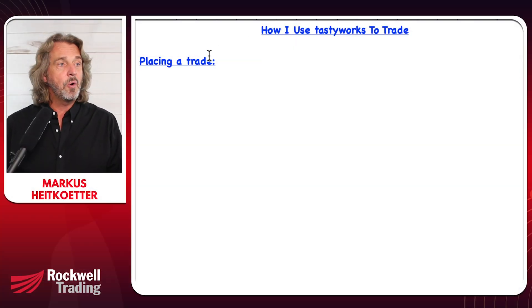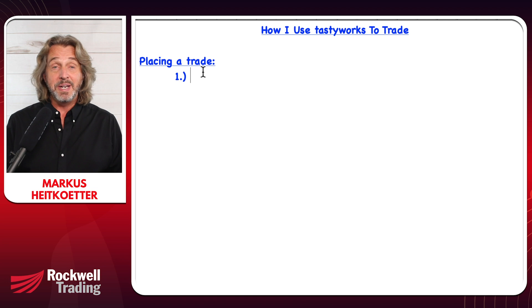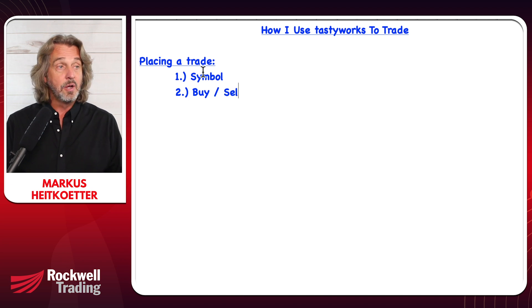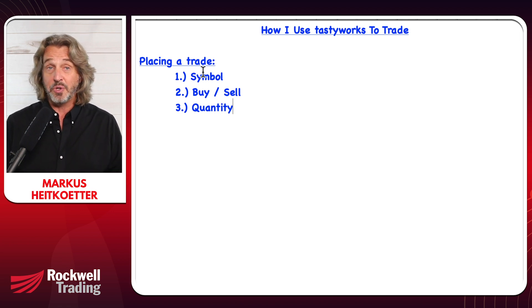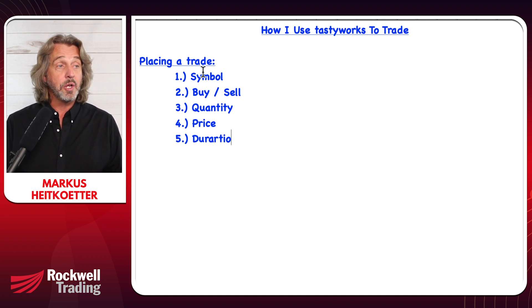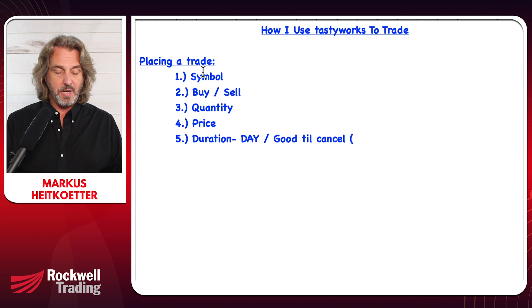Let's briefly recap: in order to place a trade, there are five things your broker needs to know. First, what do you want to trade — the symbol, whether it's a stock or an option. Second, whether you want to buy or sell. Third, how many shares or options you want to trade — the quantity. Fourth, at what price you want to buy or sell. And fifth, the duration: either a day order or a good-till-cancel (GTC) order.